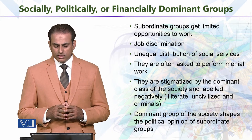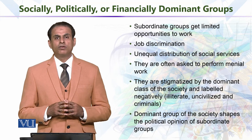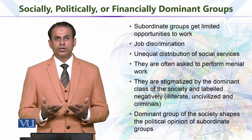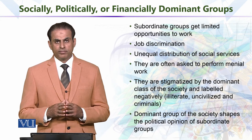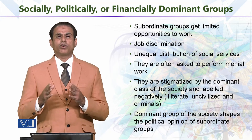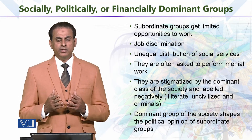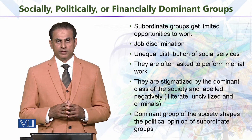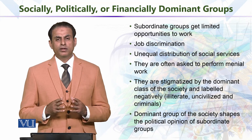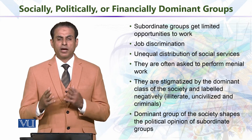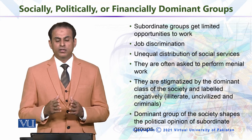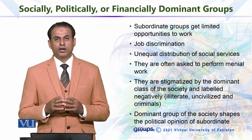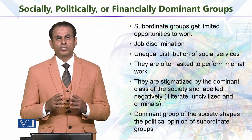The dominant group of the society shapes the political opinion of subordinate groups. Again, it depends on the individual and how he or she is reacting to the society. Sometimes we see that members from minority groups take the lead because, being proactive, they react to the environment efficiently. But sometimes if it happens, it cannot be generalised. So generally, it is considered that people who are socially, politically, and financially strong are considered dominant groups in the society.